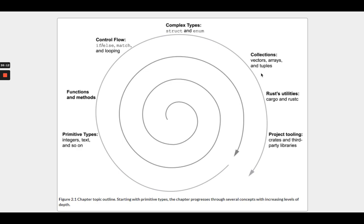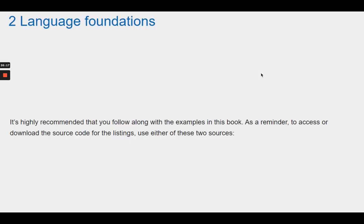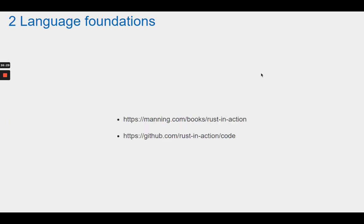It's highly recommended that you follow along with the examples in this book. To access or download the source code for the listings, use either Manning.com/books/rust-in-action or GitHub.com/rust-in-action/code.